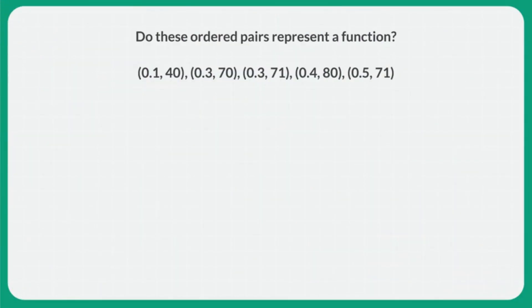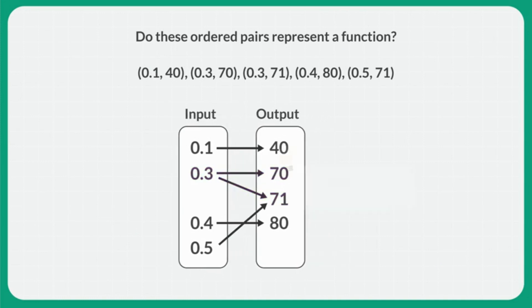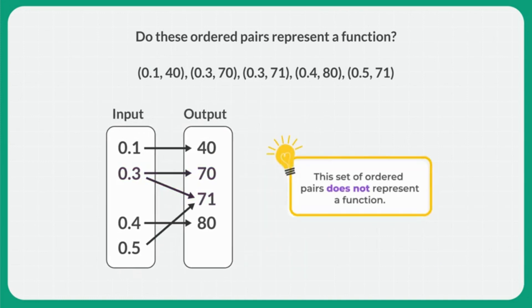Use what you've learned to figure out if these ordered pairs represent a function. These ordered pairs can be shown on an input-output map like this. As you can see, the input of 3 tenths has two different outputs — 70 and 71. So these ordered pairs do not represent a function.